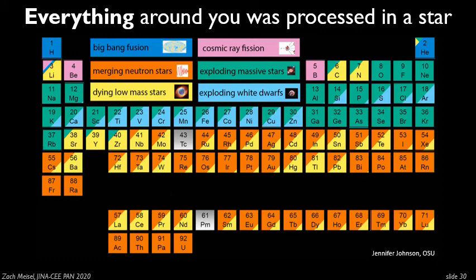We can look at this differently on the periodic table — a really cool chart that Jennifer Johnson at Ohio State University made. The color coding of each box tells you where we believe those elements were made, and this is the state of our current knowledge. This may well change — if you looked at a plot like this 10 or 15 years ago, the orange boxes now representing merging neutron stars were thought to be made in exploding massive stars. We now know that's less likely — it's much more likely they're made in merging neutron stars. It's your job as future nuclear astrophysicists to refine this chart and help confirm that it's all actually correct.